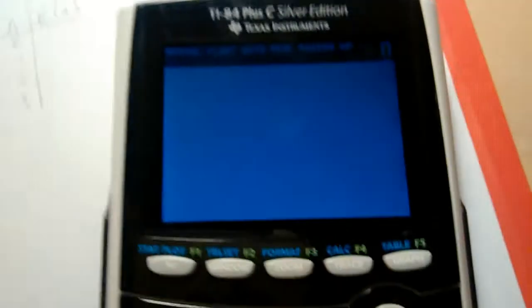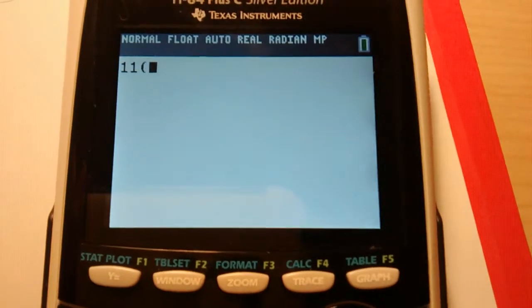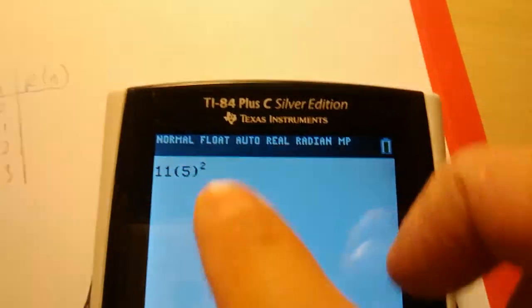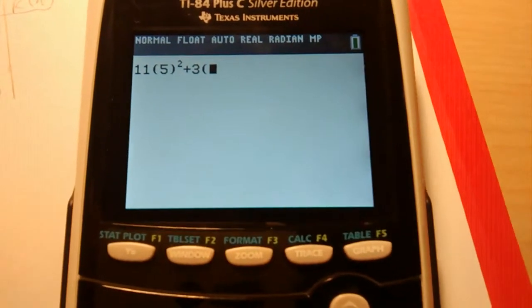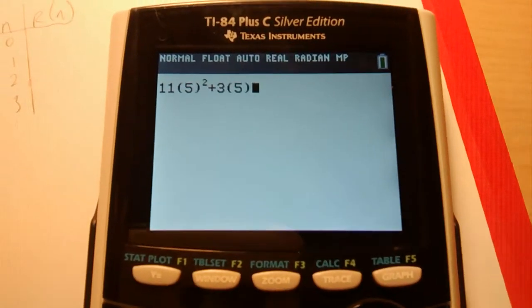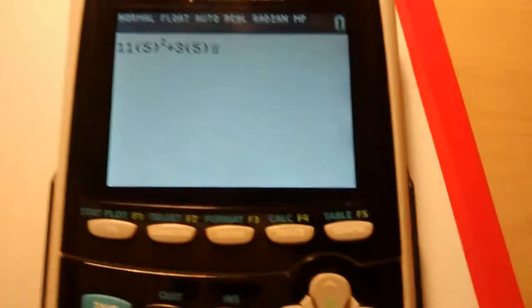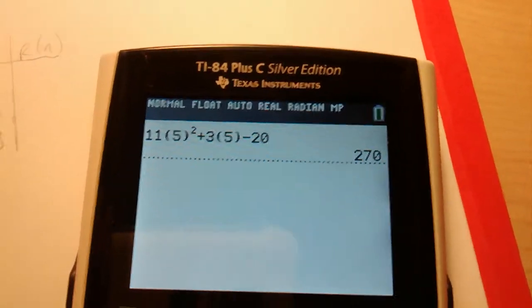So we can do that in one shot on our calculator. So that is 11 in parenthesis, 5, I'm hitting the squared button here, squared button gives me a squaring, and then plus 3 times n, just 5 here. I don't need parenthesis, I can use the times button, but I'm just using parenthesis, minus 20. So r of 5 is 270.